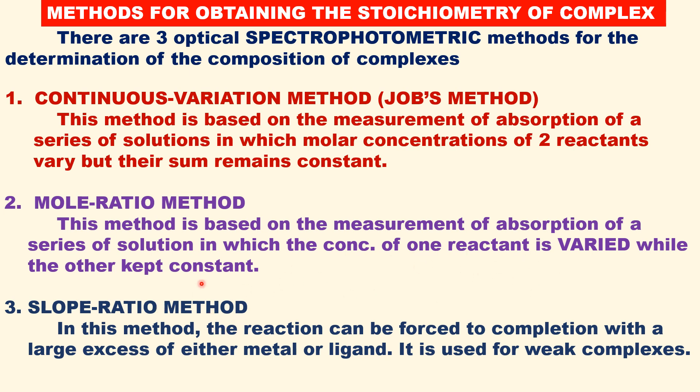In the slope ratio method, the ligand is taken in large excess. It is mainly used for weak complexes that are unstable, so we need to add excess of ligand to form the complex.